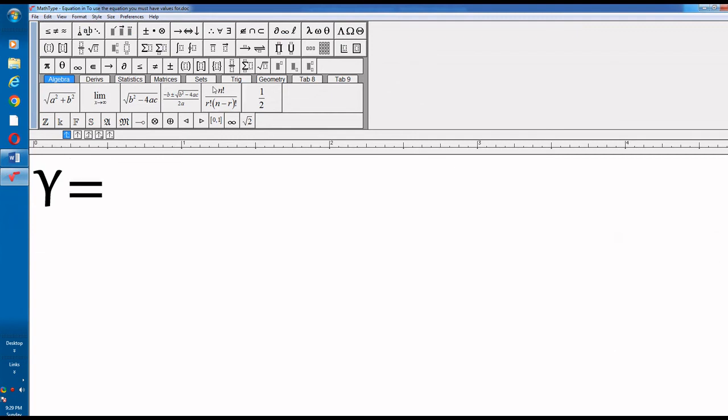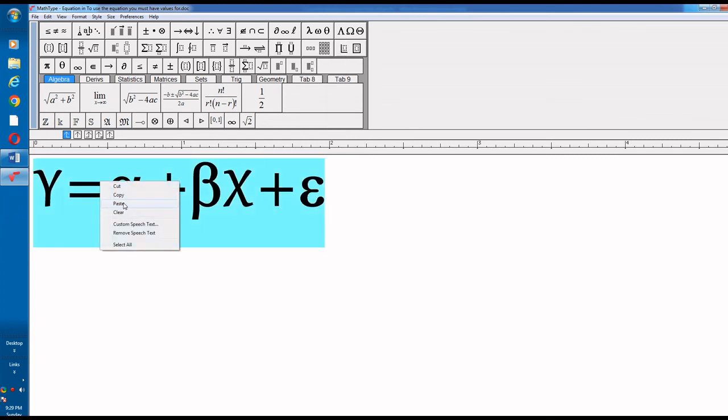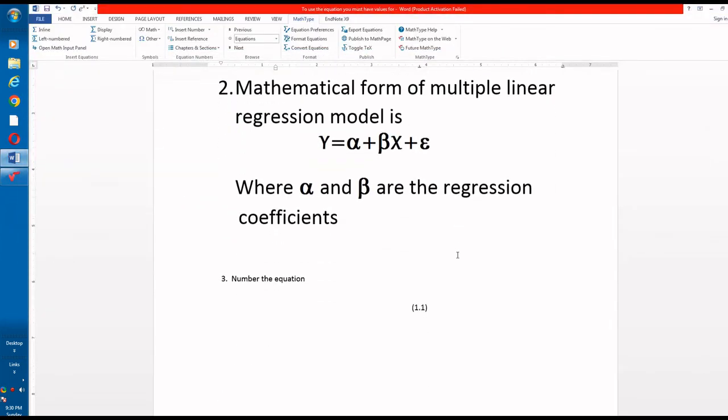Write equation in the similar fashion as we previously write: alpha plus beta. So here is the shift X, editor copy, here you paste your equation and there is the number.